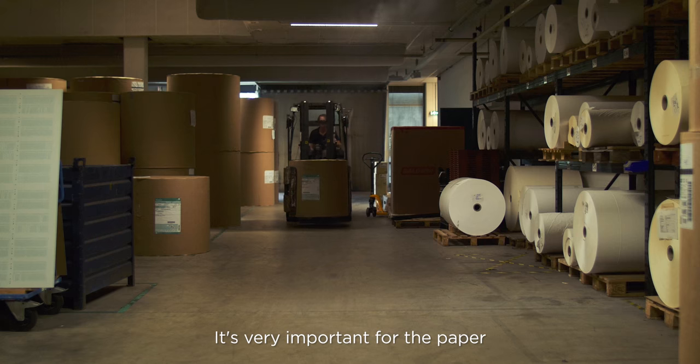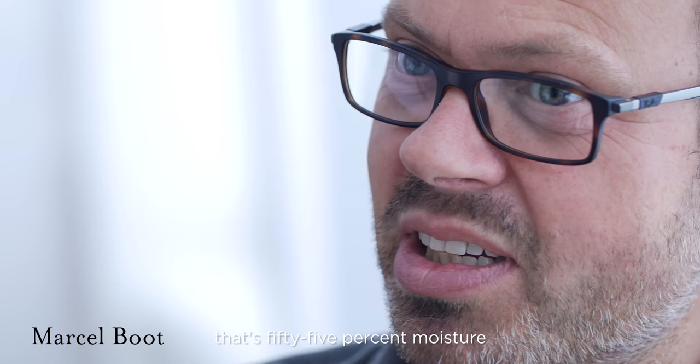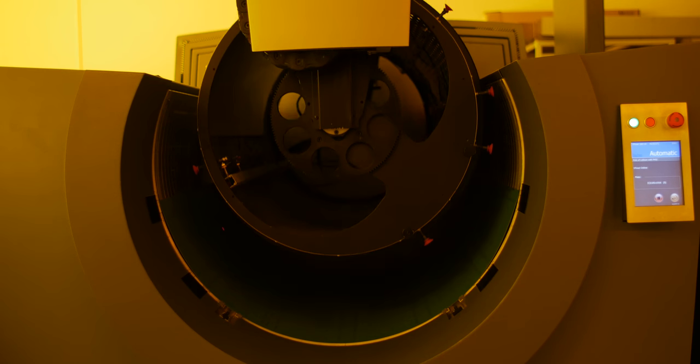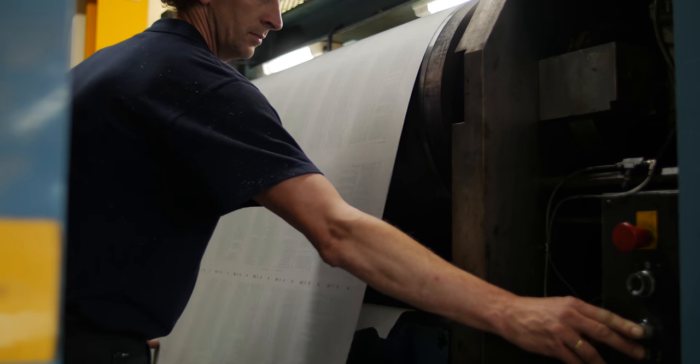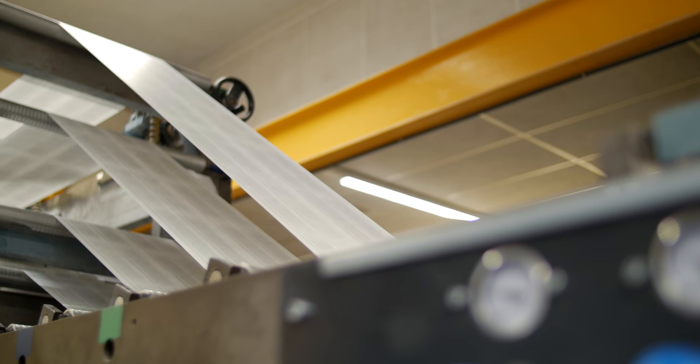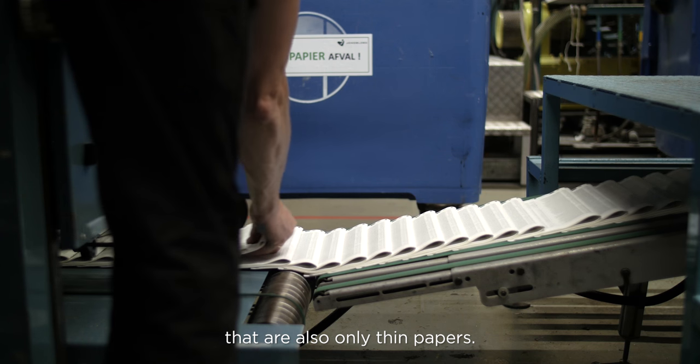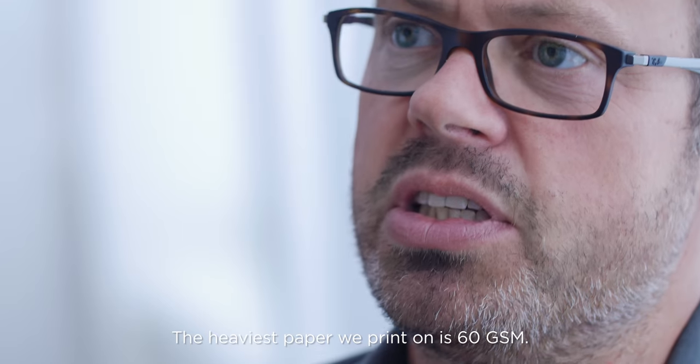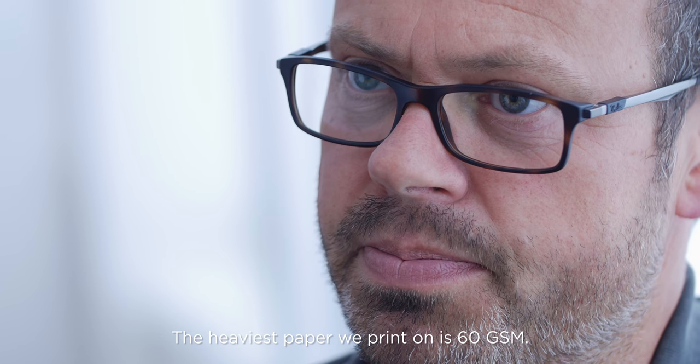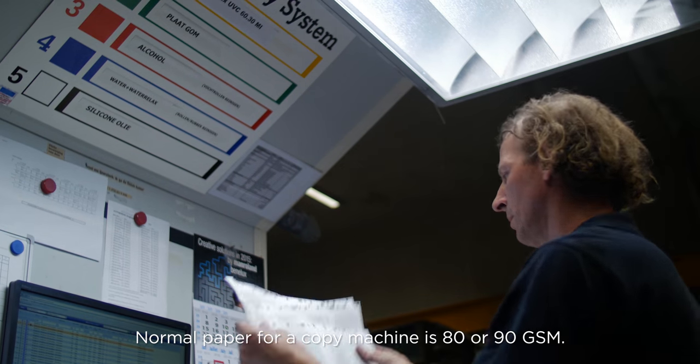It's very important for the paper. It's printed in an environment at 55% moisture and the temperature at 20 degrees. In the printing room we use only high quality papers, only thin papers. And the heaviest paper we print on is 60 GSM. A normal paper for a copy machine is 80 or 90 GSM.